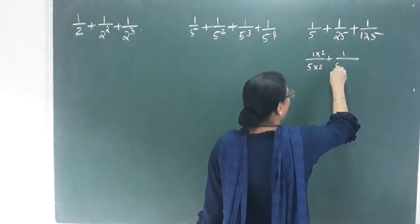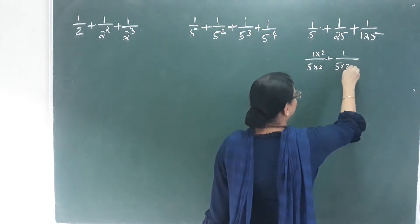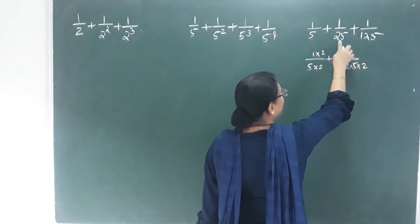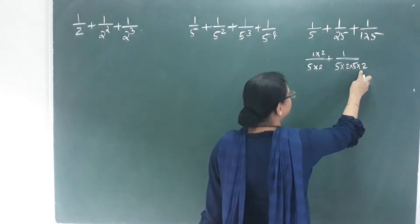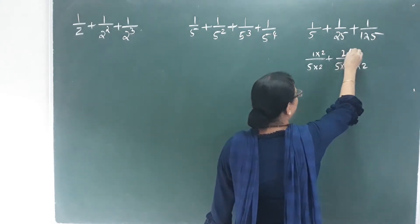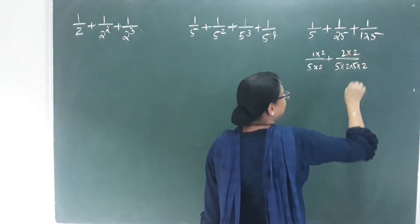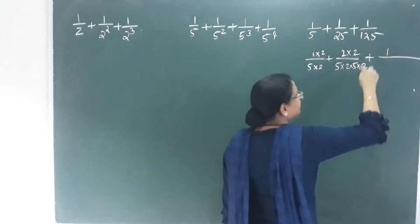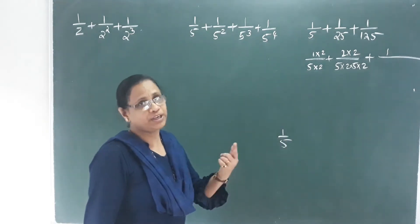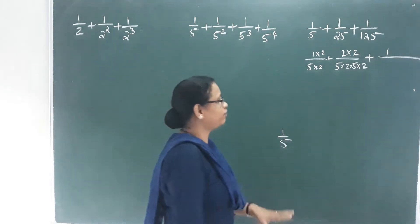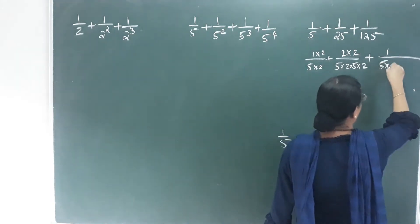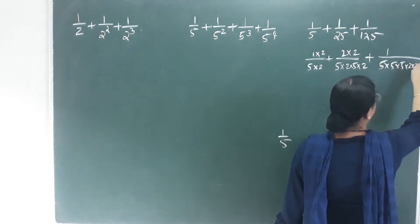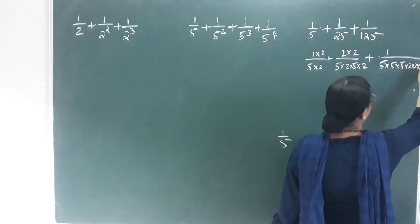We have two 5s. Then 5 into 2, 5 into 5. Then 2 into 2. So there are three 5s — 5 into 5 into 5 — and we multiply the value accordingly, then change the value. I multiply the value.